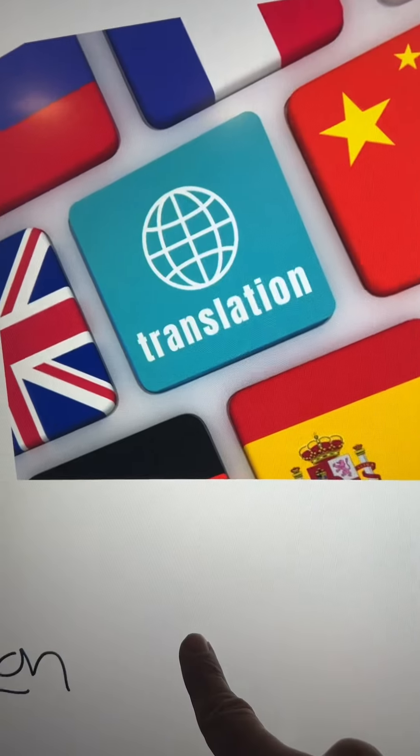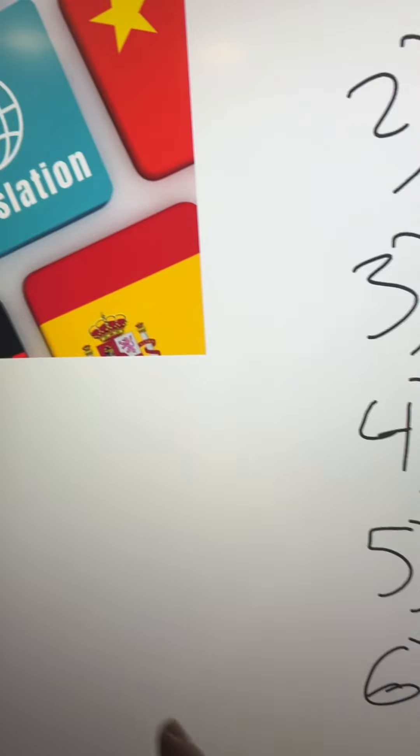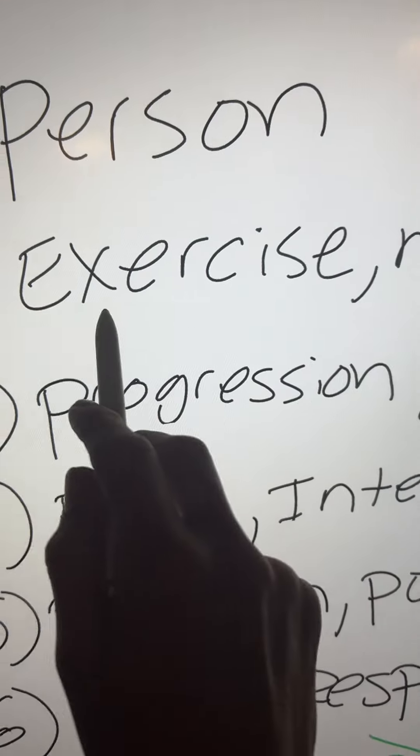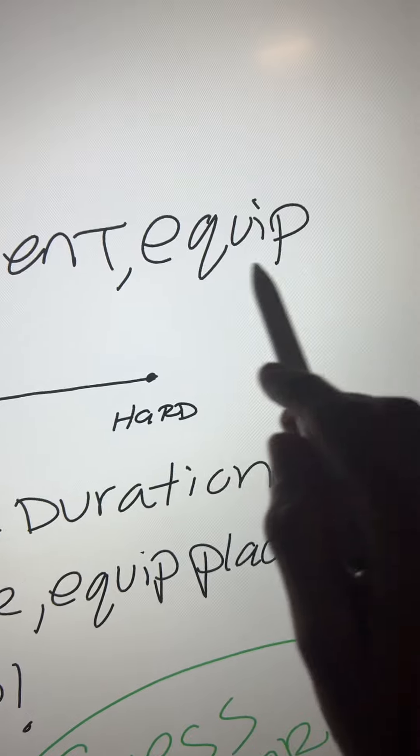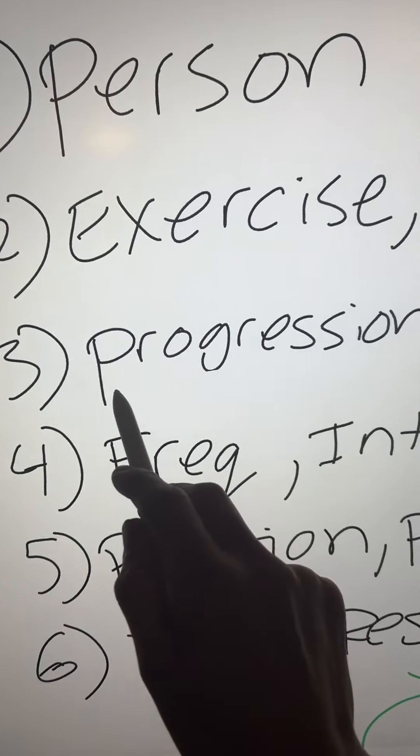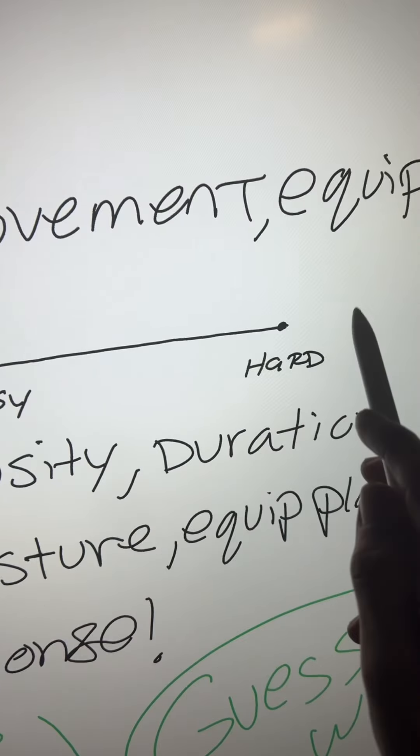Let's translate for you. For you, the exercise program has to be for the right person. It has to be the correct exercise, the correct movement, the correct equipment, and it has to be the correct timing of progressions from easy to hard.